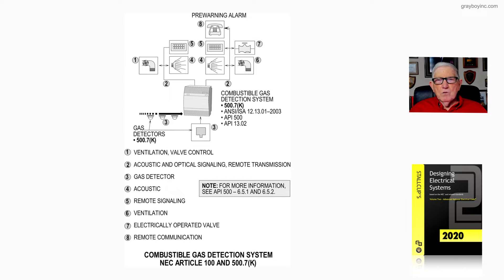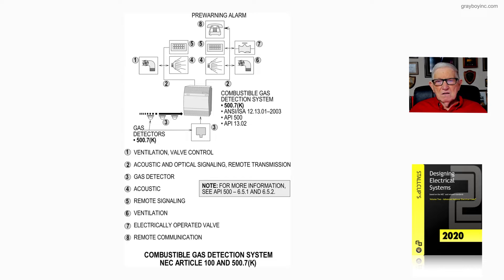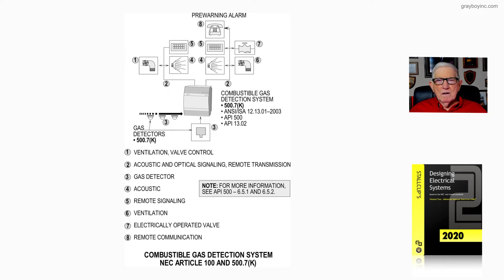Let's look at figure 21-22, which deals with gas combustion detection systems in accordance with 500.7k. These systems are defined in article 100 part 3. They can be used in a number of ways, including ventilation valve control, optical signaling, remote transmission, gas detectors, acoustical remote signaling ventilation, electrical operated valves, and remote communication. Notice all the areas that this pre-wiring alarm system could be used in a classified area.